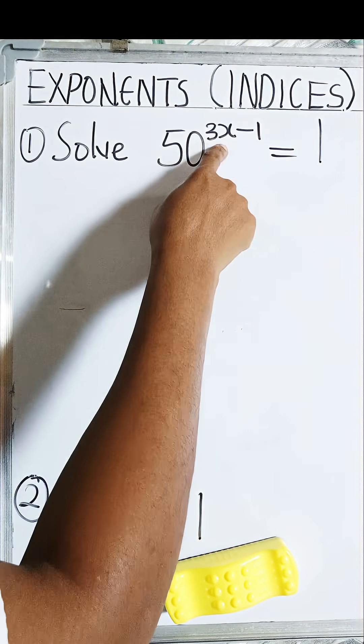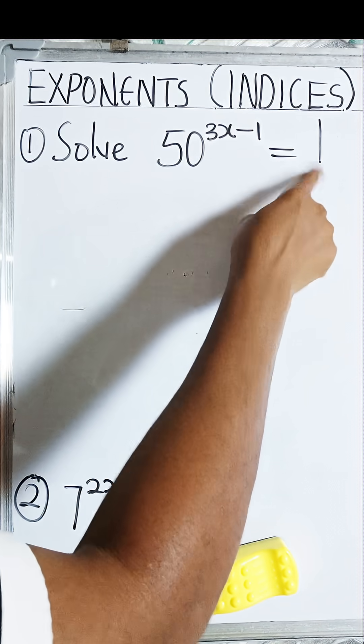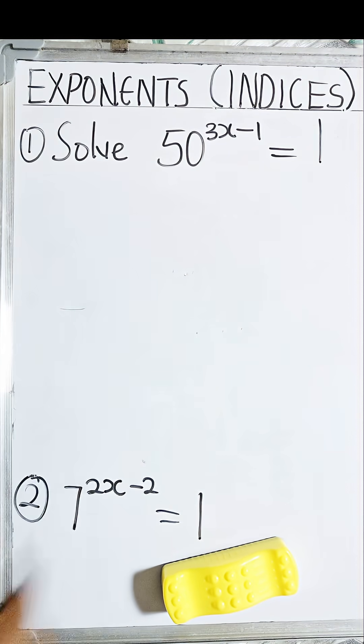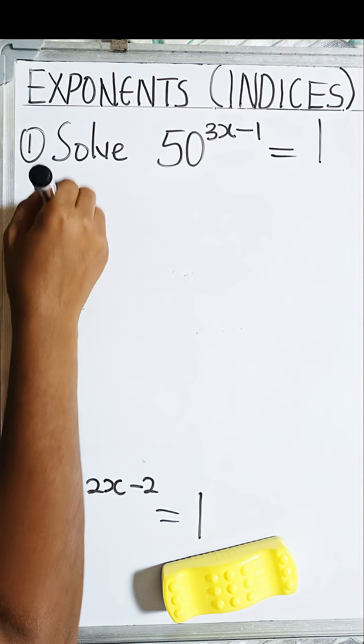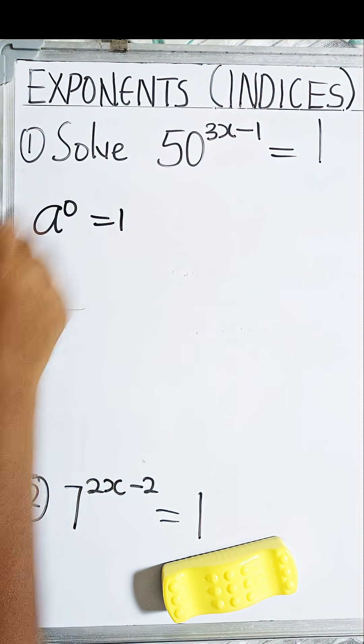Solve 50^(3x-1) = 1. This is a tricky question, but if you can remember one of the laws of indices, which states that a^0 = 1.